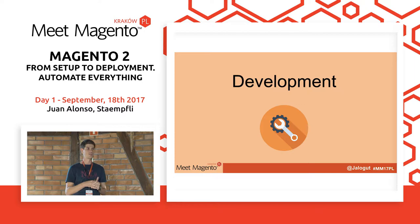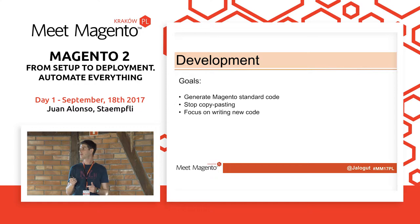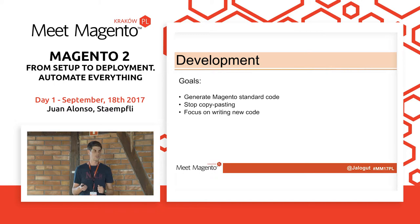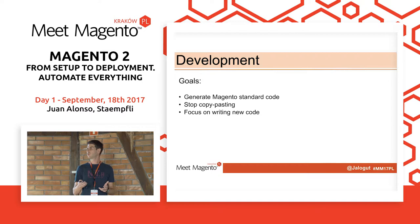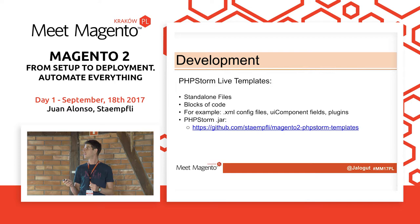Development. So we've seen how to automate the setup and build, and now you might say you cannot automate development, you cannot create code automatically. In fact, you can — not for everything — but our goals will be to generate the standard code that is always the same in Magento and stop copy-pasting. In Magento 2 there are a lot of configuration files and specific class formats, and it's a boring task. If we manage to avoid that, we can focus on writing only the new code, which is what is more important.